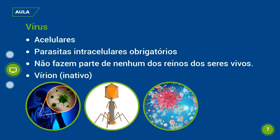Os vírus, como foi dito pela professora Sabrina, eles não são considerados seres vivos. Por que eles não são considerados seres vivos? Porque eles não têm célula. Por não terem célula, eles são chamados de acelulares. Além disso, eles são considerados parasitas intracelulares obrigatórios. Como não têm célula, eles precisam invadir a célula dos seres vivos para poder se reproduzirem.